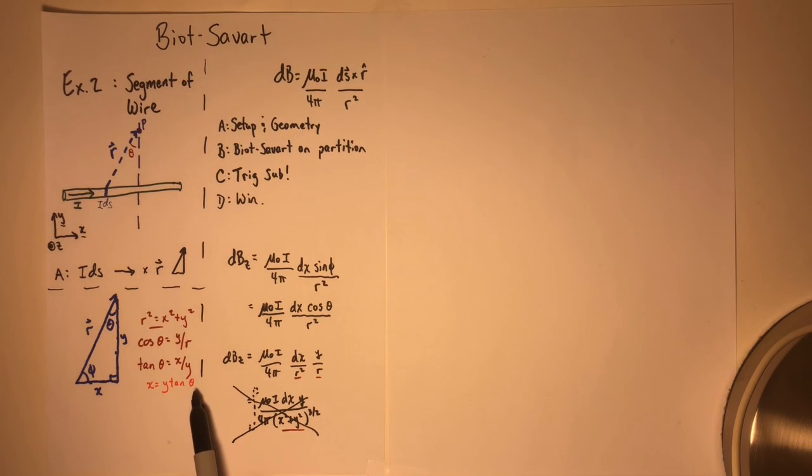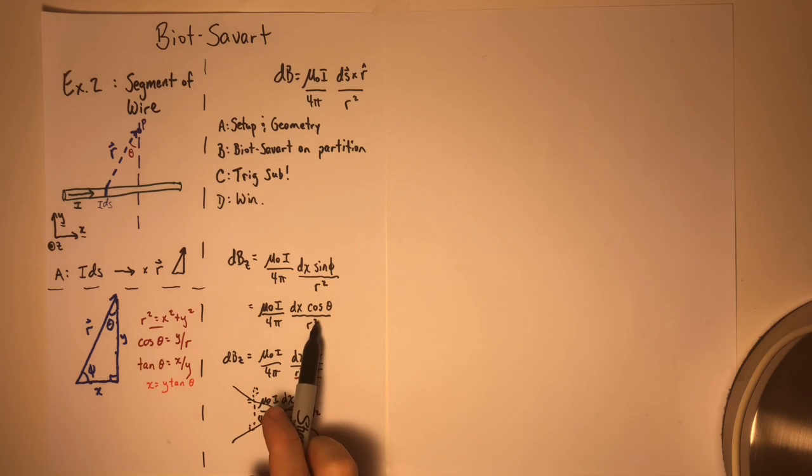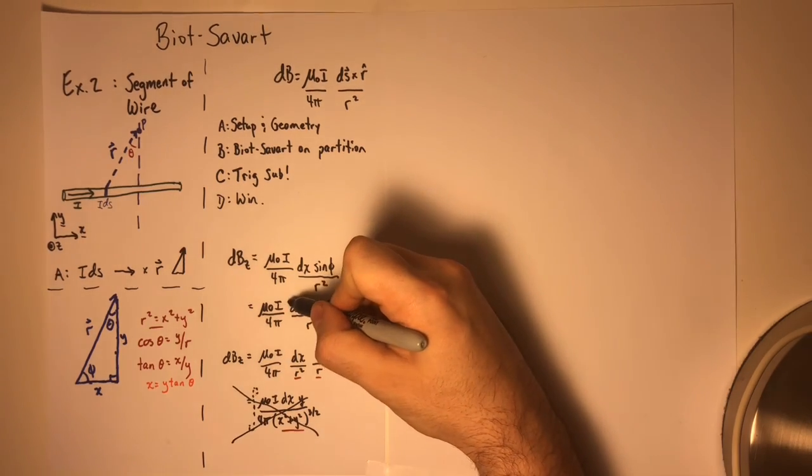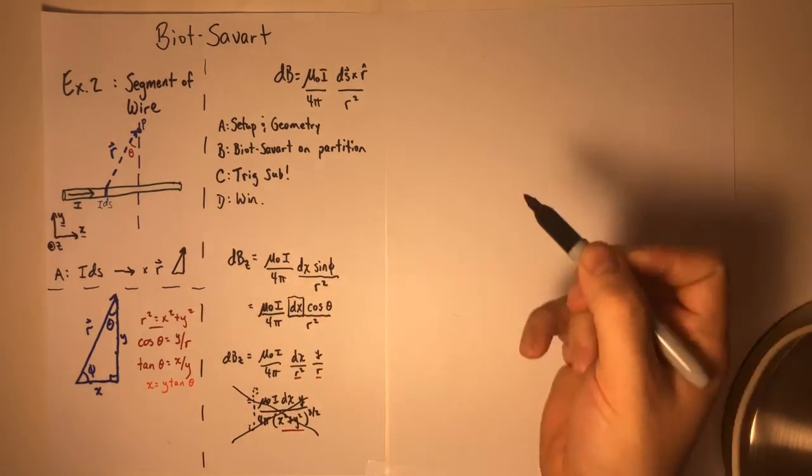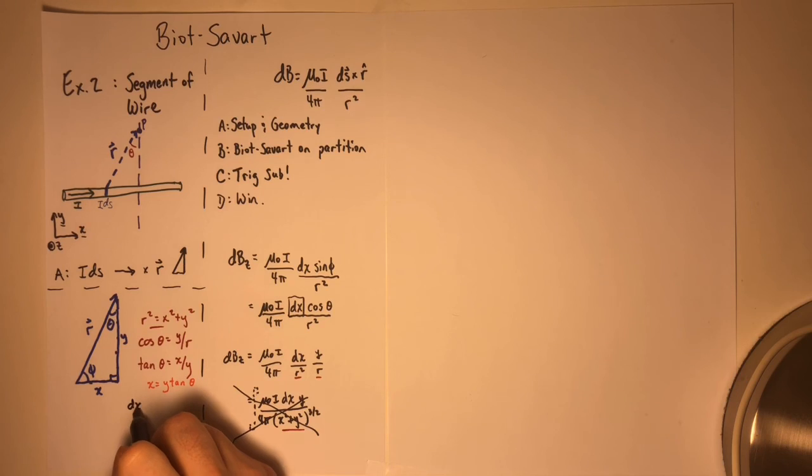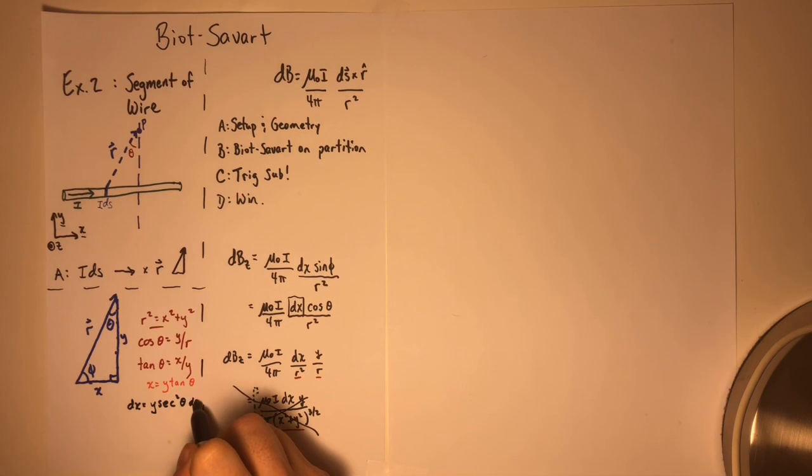The first thing that becomes obvious is that in order to express this thing as an integral over theta, you're going to need a d theta, which means you somehow have to replace dx with something from this list of trigonometric identities. The easiest one is, of course, this one right here, because Y is a constant as far as this integral is concerned, and tan theta has a very well-known derivative. So this becomes dx equals Y times sec squared theta d theta. And that's going to turn out to be a really useful thing for us to take advantage of.